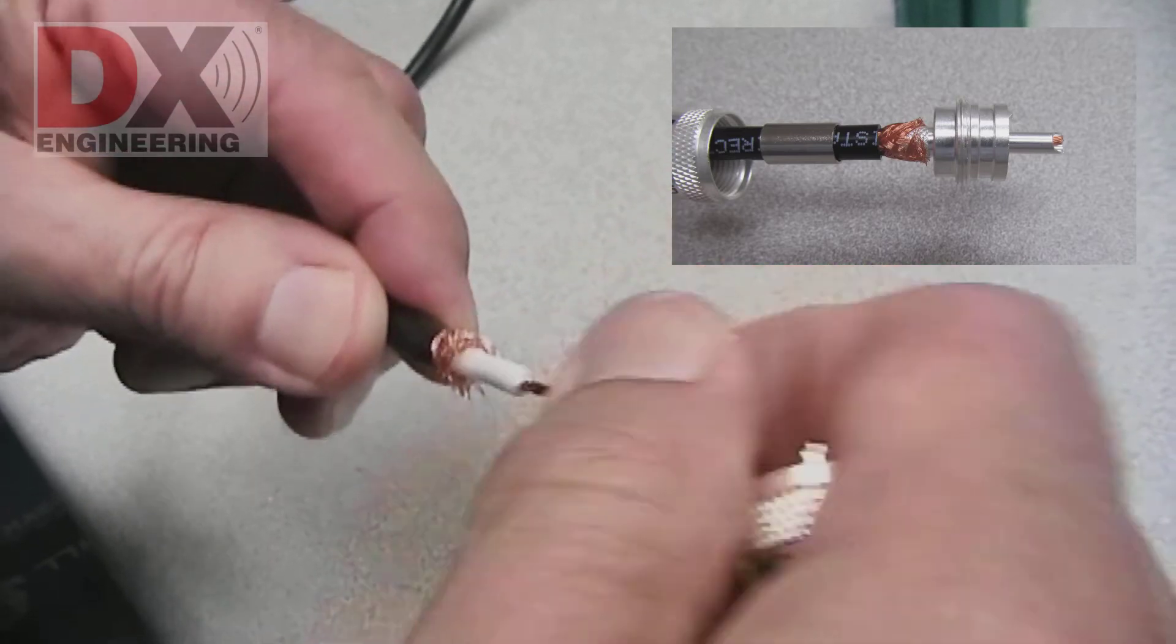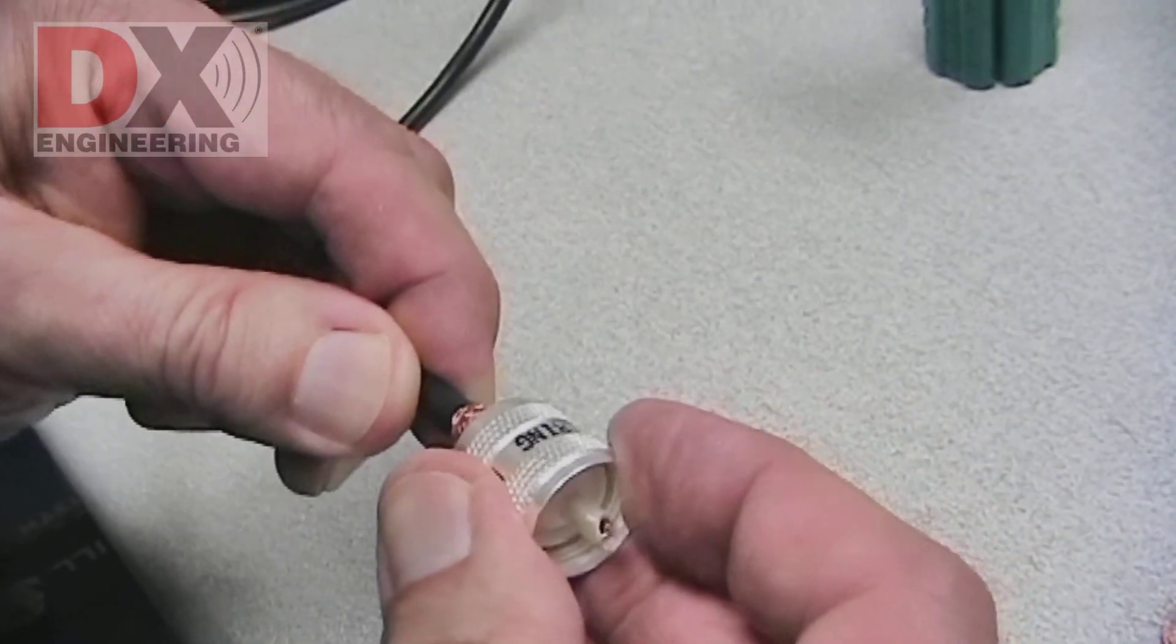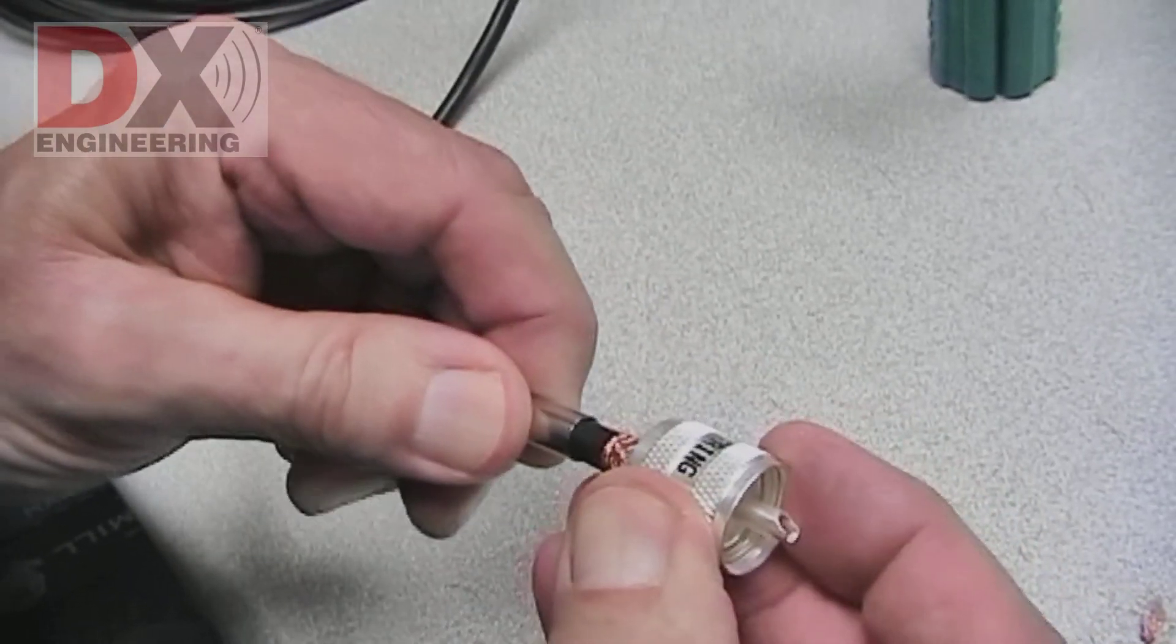Sometimes, giving the center conductor a slight twist helps the center strands to fit easier. The PL259 slides under the braid.